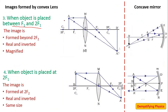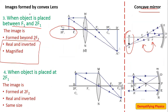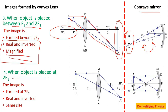When the object is placed between F1 and 2F1 — analogous to between F and C in a concave mirror, where the image forms beyond C — the parallel ray passes through the focus, the second ray passes through the optical center, and the image is formed beyond C2. When the object is placed at 2F1 (the C case): the parallel ray passes through focus, the second through optical center, and the image forms at 2F2 on the other side — real, inverted, and same size.